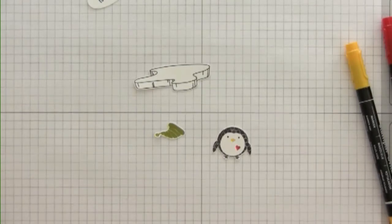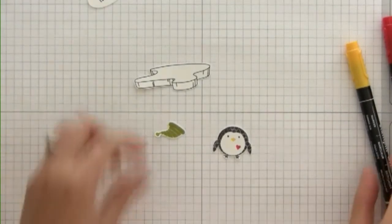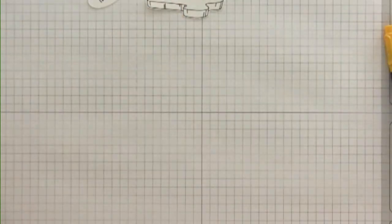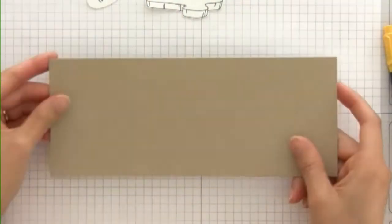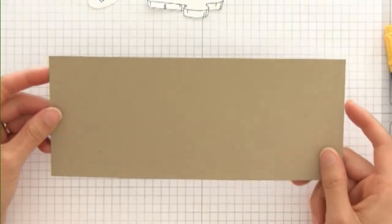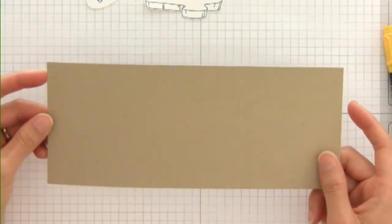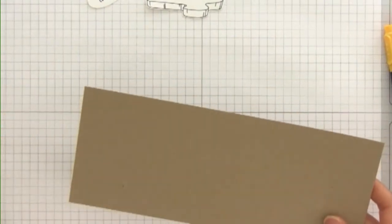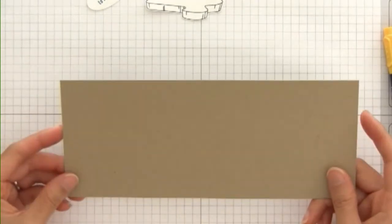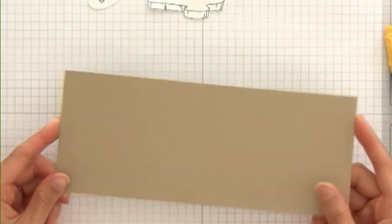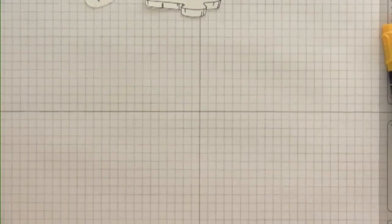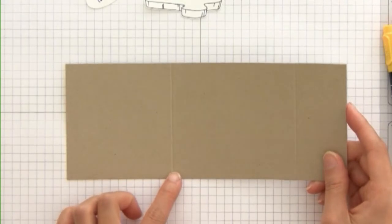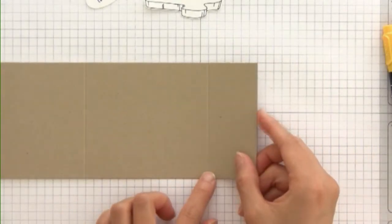I have all of my images cut out, so now I'm going to set those aside. I have a piece of craft cardstock that is cut to 3½ inches by 8½ inches, and I am going to score that at 3¼ inches and at 7 inches.